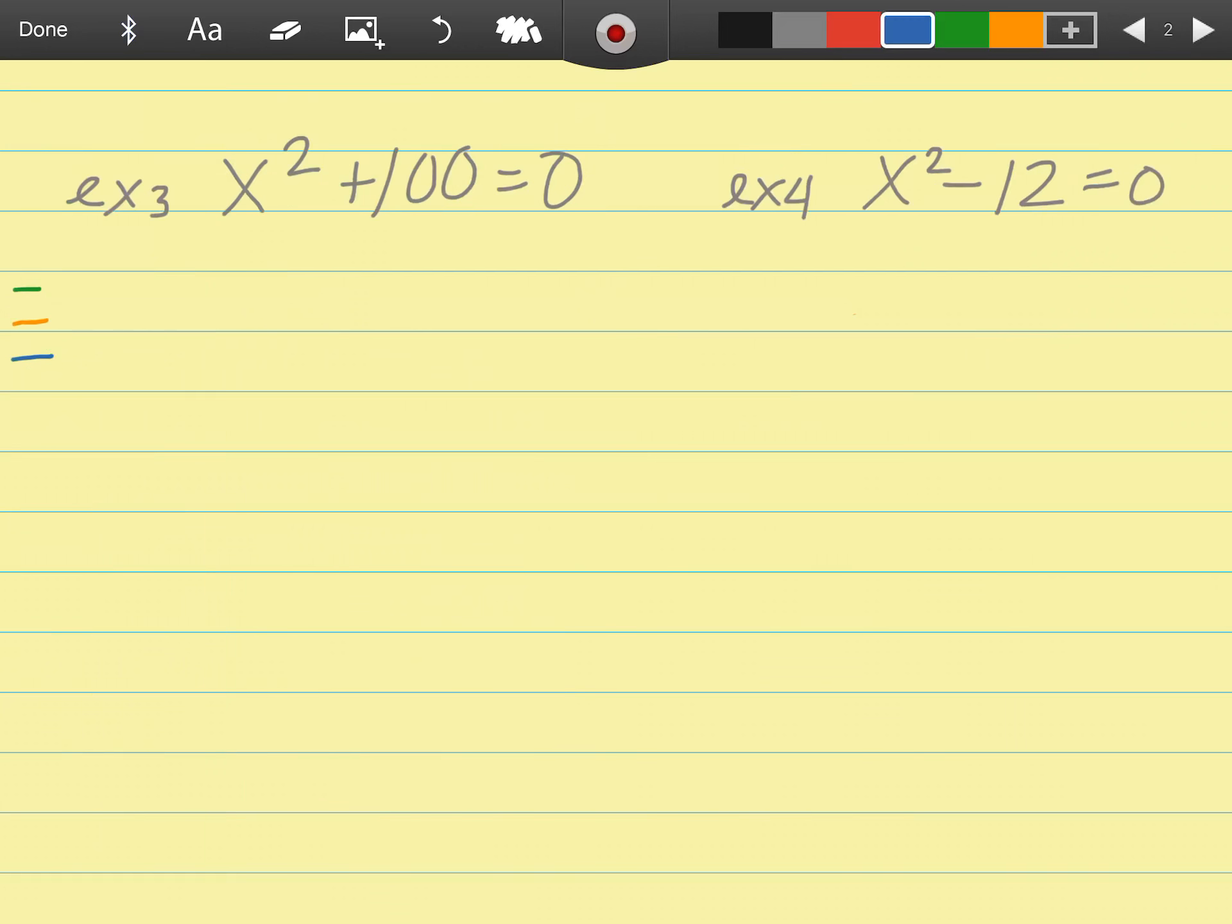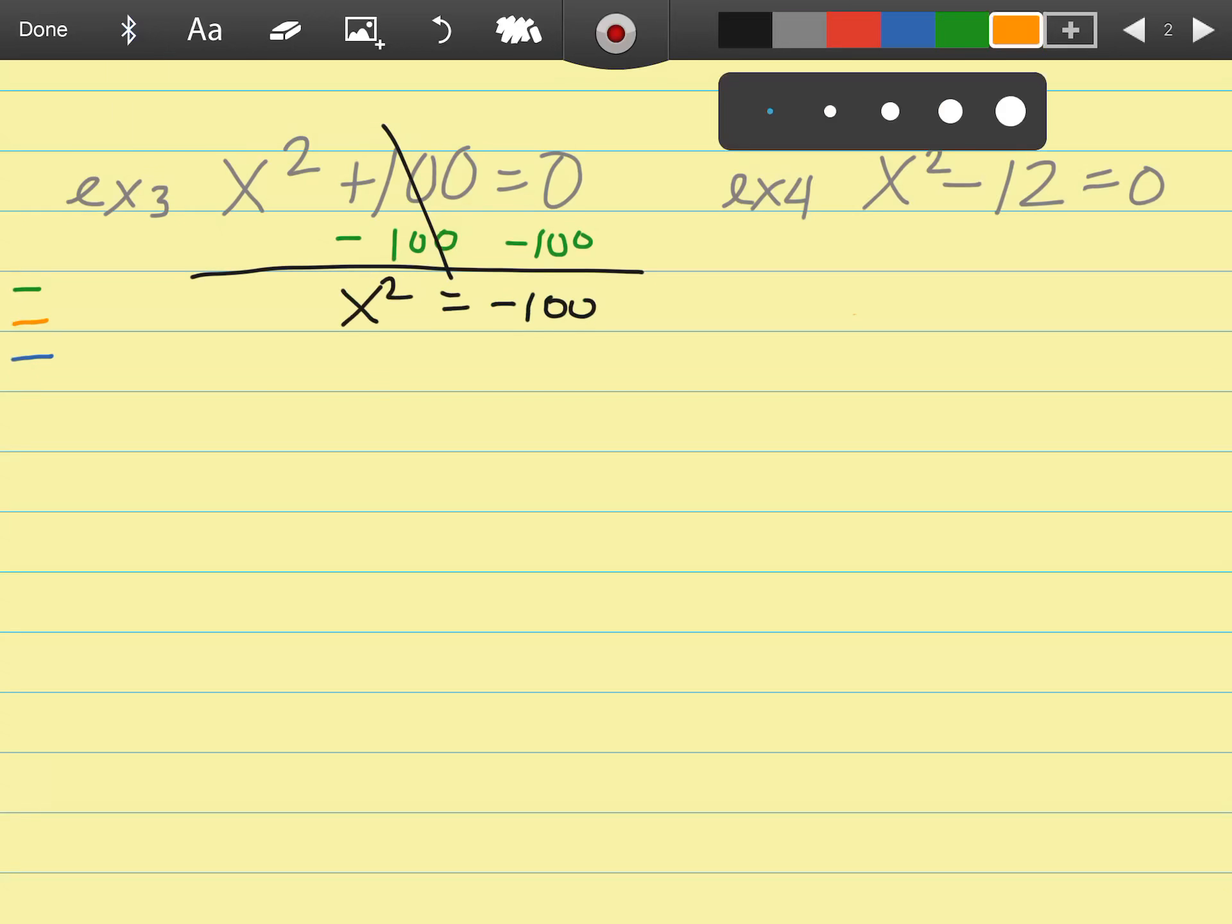Step one: isolate your variable, so I need to subtract 100 from both sides. That will cancel, I now have negative 100 equals x squared. Step two: we're going to square root. The square root of x squared is fine, but then I've got a problem right here.